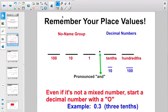Welcome to Math Lesson 67. We're all about writing tenths and hundredths as decimal numbers. So the big thing to remember is you gotta know your place values. Here we have the no-name group. If we added a comma and three more digits, that would be the thousand group, right?